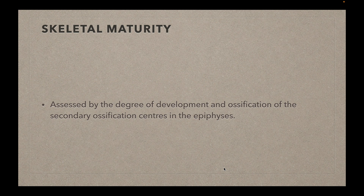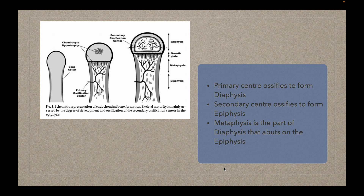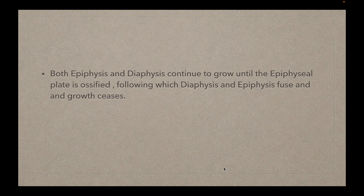Skeletal maturity is assessed by the degree of development and ossification of the secondary ossification centers in the epiphysis. This picture describes the various parts of the bone as far as growth and development are concerned. The epiphysis develops from the secondary ossification center, and the diaphysis is the long tubular part that develops from the primary ossification center. The metaphysis is that part of the diaphysis that abuts on the epiphysis. Both epiphysis and diaphysis continue to grow until the epiphyseal plate is ossified, following which the diaphysis and epiphysis fuse and growth ceases.